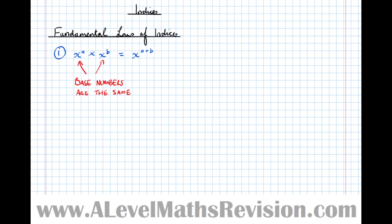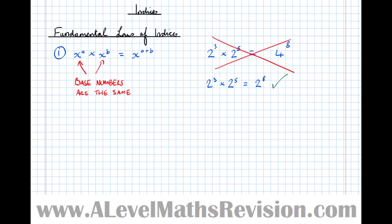A common misconception: take 2 to the power of 3 times 2 to the power of 5. One common mistake is to add the powers to get the power of 8, but also multiply 2 times 2 to get 4 to the power of 8 — that isn't right. Think of it as a chain of 2s: 2 cubed is three 2s multiplied together, and 2 to the power of 5 is five 2s — giving 8 twos in total, i.e. 2 to the power of 8. So don't multiply the base numbers together; just add the powers.